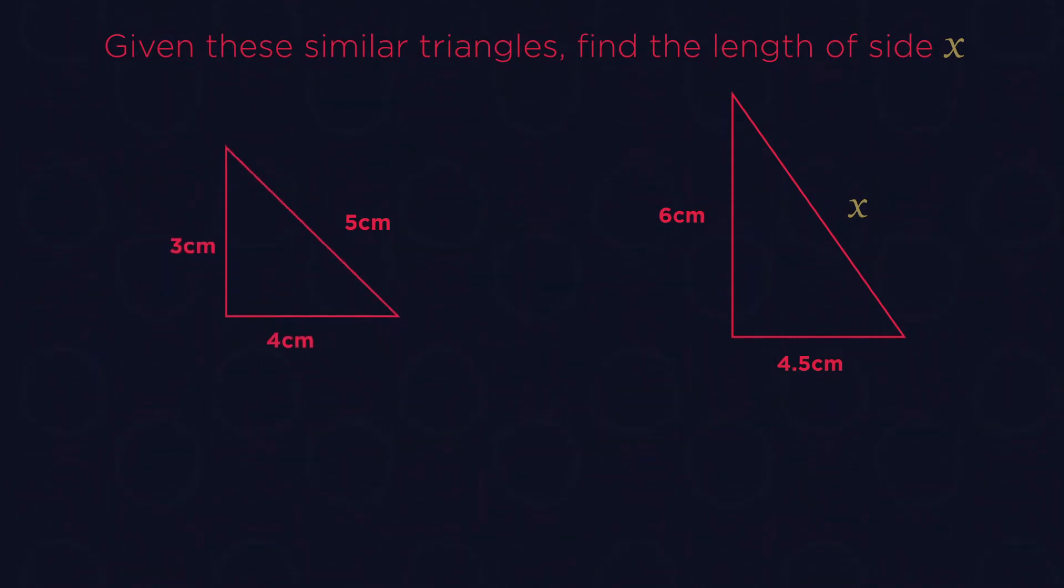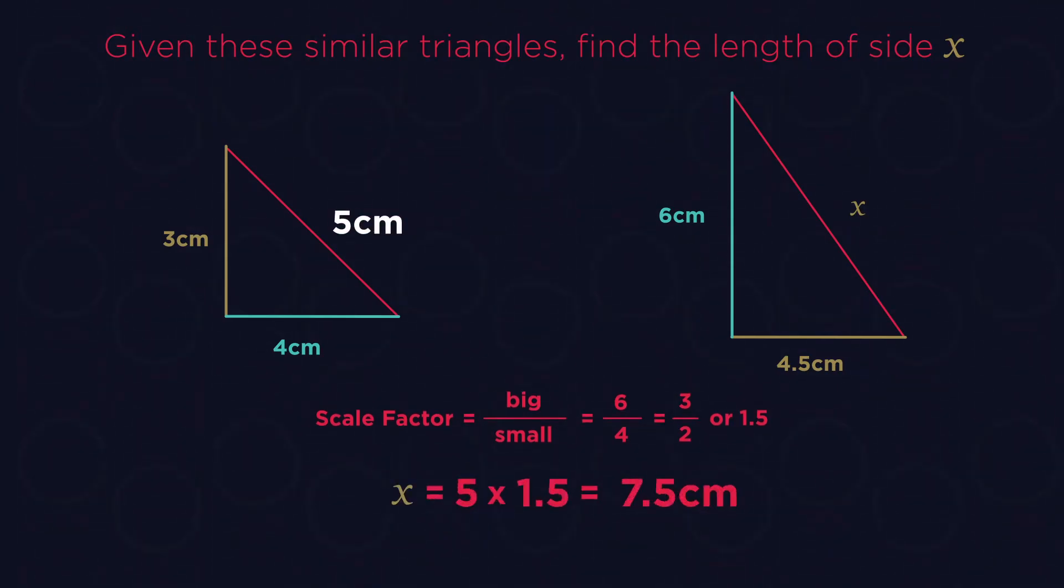So back to the question. The corresponding sides are the 3cm and the 4.5cm, and the 4cm corresponds to the 6cm. Find the scale factor. So the bigger divided by the smaller. So the triangle on the right is 1.5 times bigger than the other one. So 5cm here means the corresponding length is 5 multiplied by 1.5, which is 7.5cm.